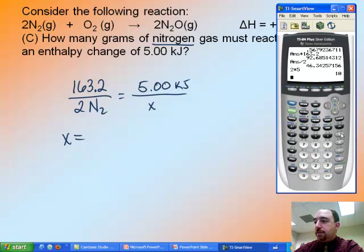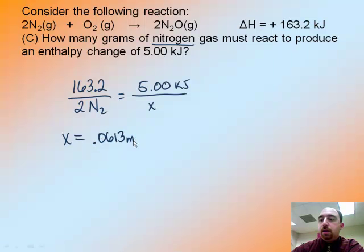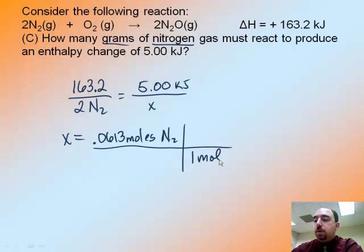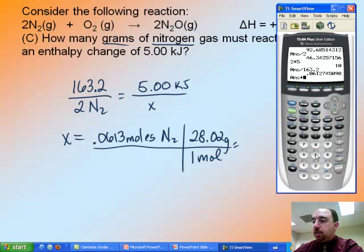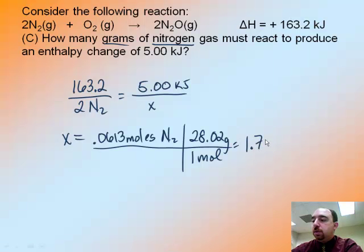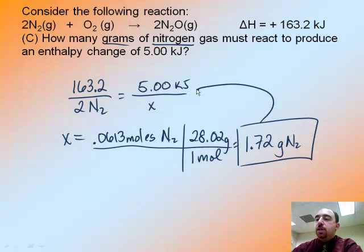2 times 5 is 10, divided by 163.2 is 0.0613 moles of nitrogen. But that's not my answer. The question asks for grams. So I do a quick mole conversion. One mole on the bottom, 28.02 grams on the top. I go back to my handy-dandy calculator, multiply this by 28.02, and I get 1.72 grams of nitrogen. So only 1.72 grams of nitrogen is needed to produce this level of heat in this type of chemical reaction.